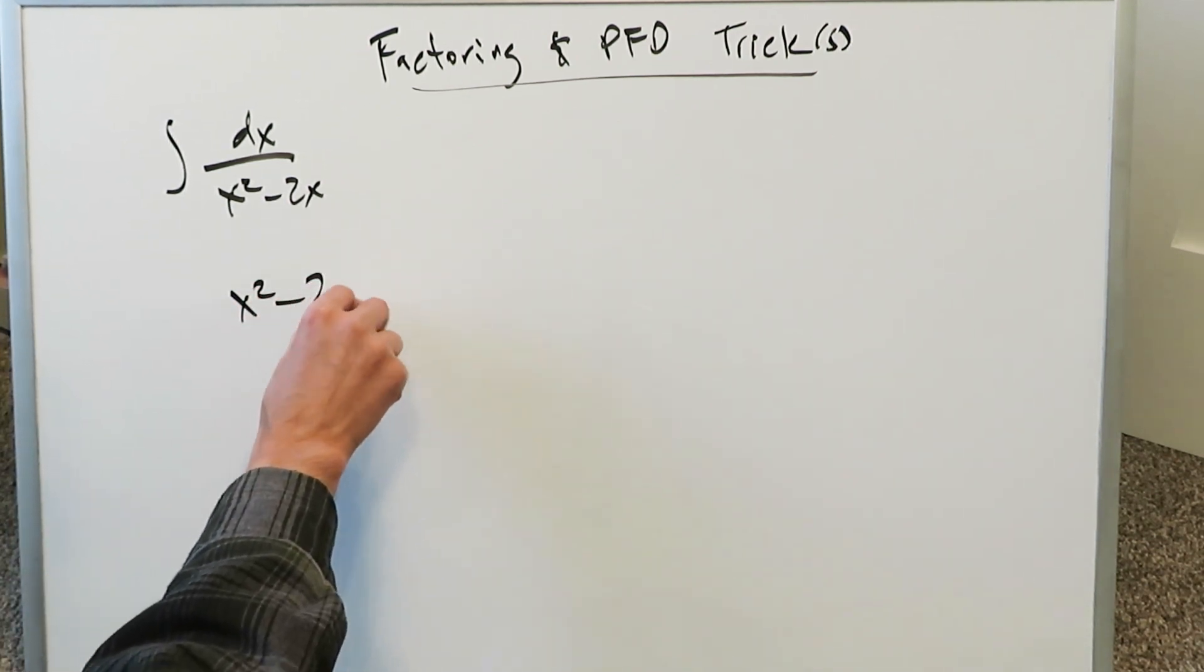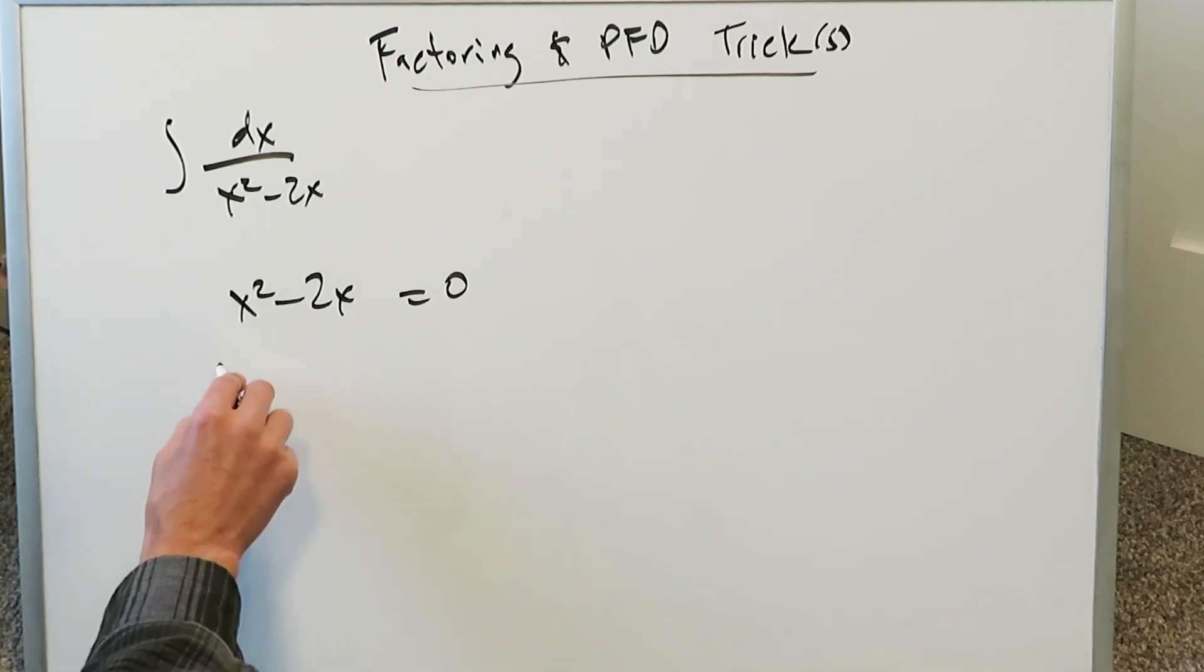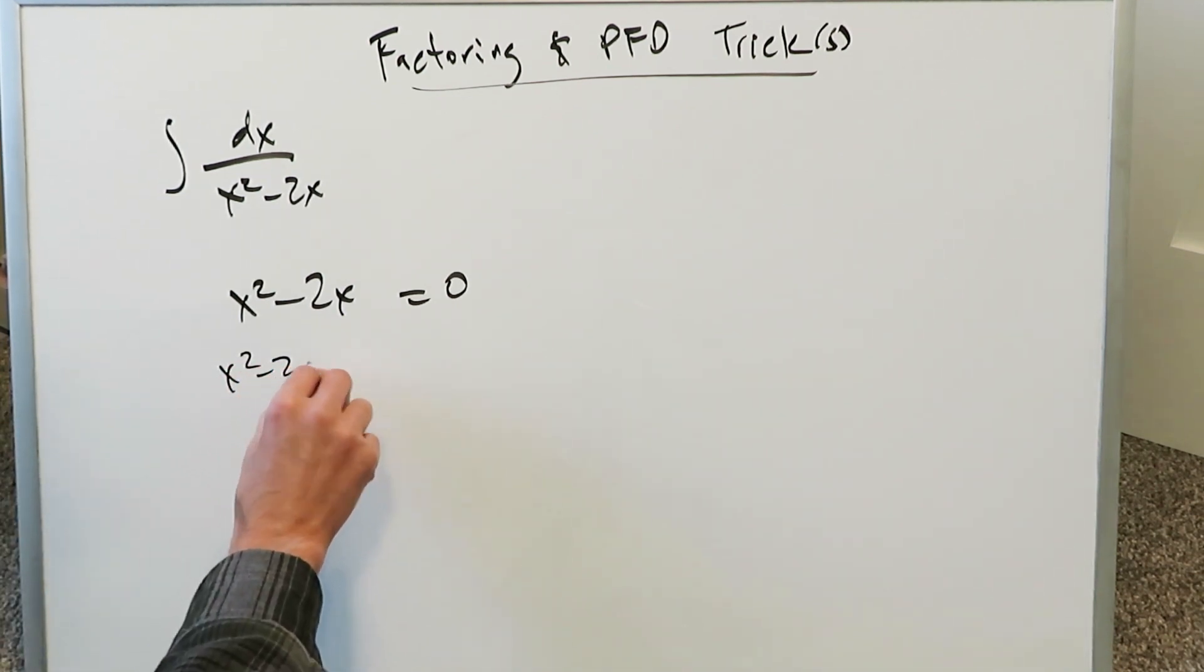Look at the denominator only, x squared minus 2x, all of that equaling zero. Complete the square and convert this into a complete format equation. You would complete it, you'll have x squared minus 2x. Here you'll have a plus 1 is equal to 1.